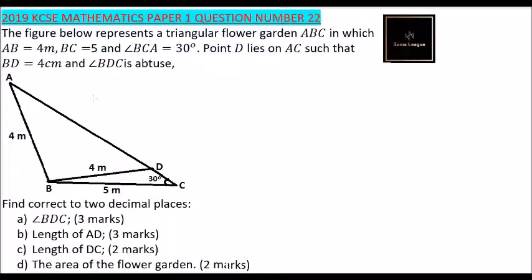We are required to find, correct to two decimal places, angle BDC. This is angle BDC, the one you can see here. For us to be able to get that angle, we can use the angle we already know—that is 30 degrees—side 4 and side 5, that is BC.